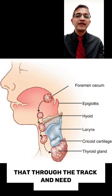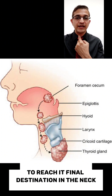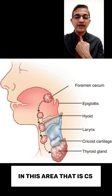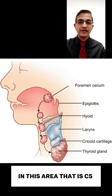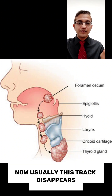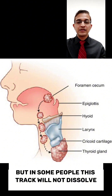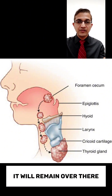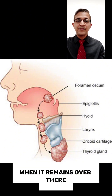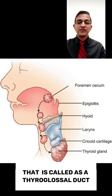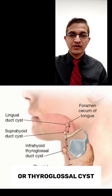Through that tract they reach their final destination in the neck at the vertebral levels. Now usually this tract disappears — it dissolves by itself. But in some people this tract will not dissolve and will remain. When it remains, that is called a thyroglossal duct.